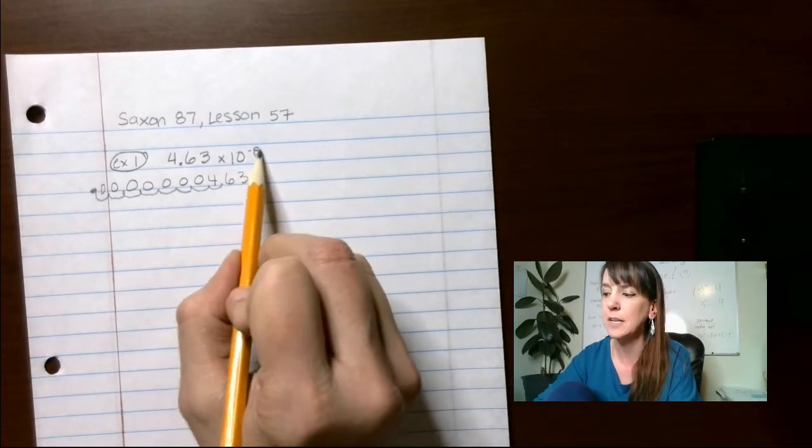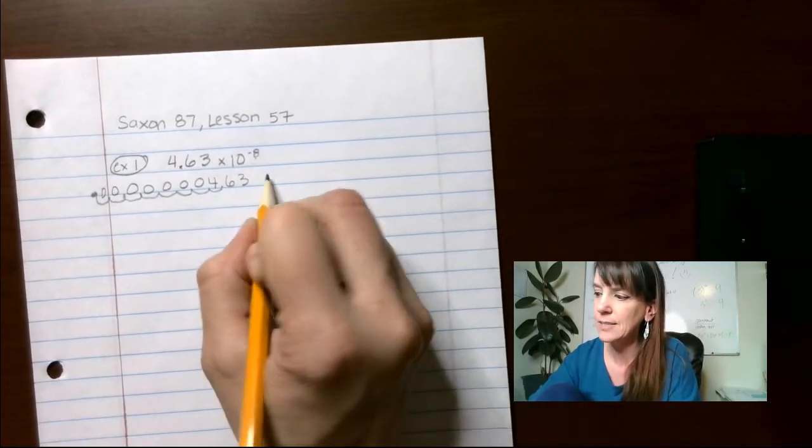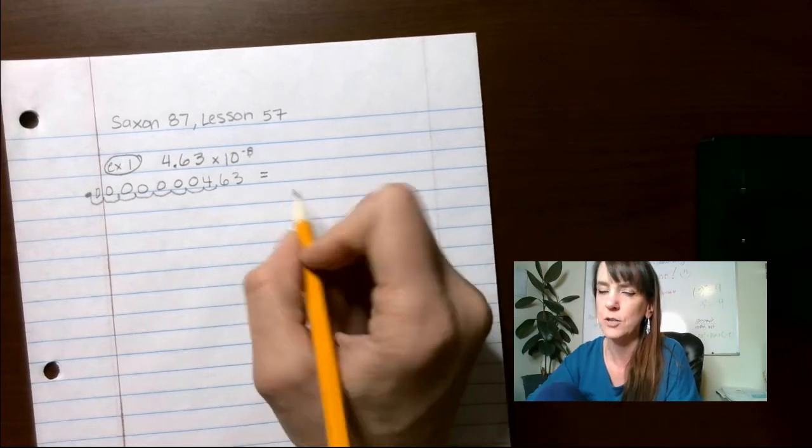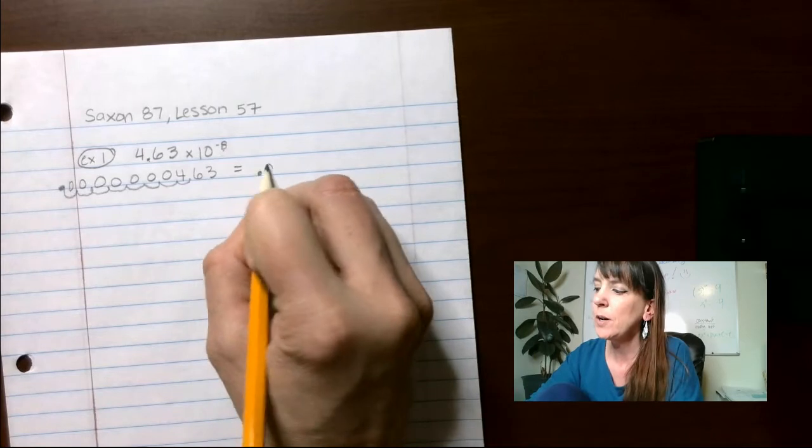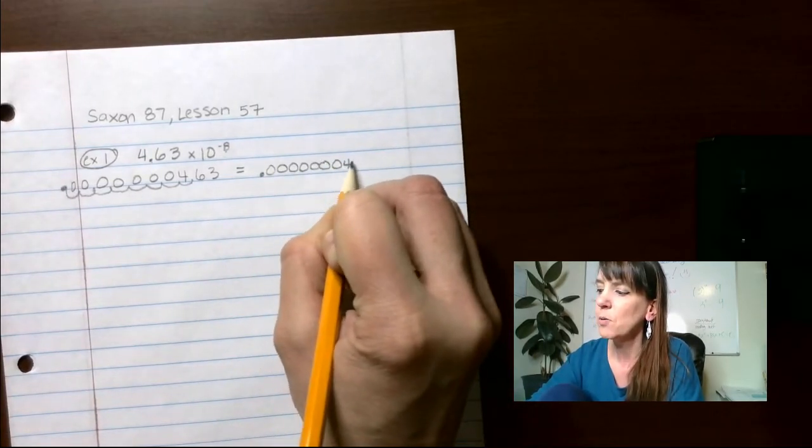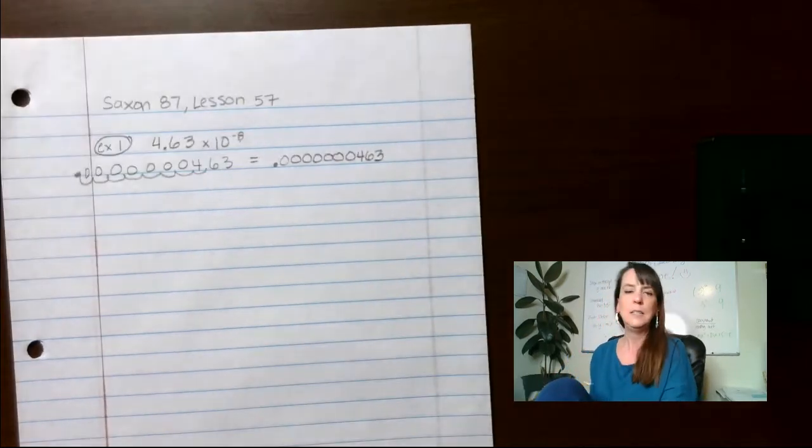Now, don't just automatically assume that it's going to be 8 zeros. That's usually not the case. It's usually one less, but if it's in scientific notation, it should be one less, but not always. So we're going to do 1, 2, 3, 4, 5, 6, 7, 4, 6, 3. Okay. That would be your answer here.